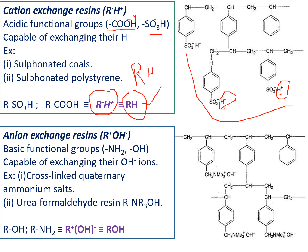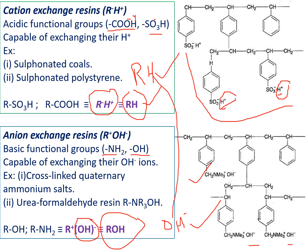The anion exchange resin exchanges the anions present in hard water. The functional groups responsible are basic groups like –NH₂OH. The anion exchange resin has a number of OH⁻ ions on its surface, so it is simply represented as ROH or R⁺OH⁻. It gives OH⁻ ions, which exchange all anions in the water. The H⁺ ions and OH⁻ ions then combine to form water molecules, removing all cations and anions.